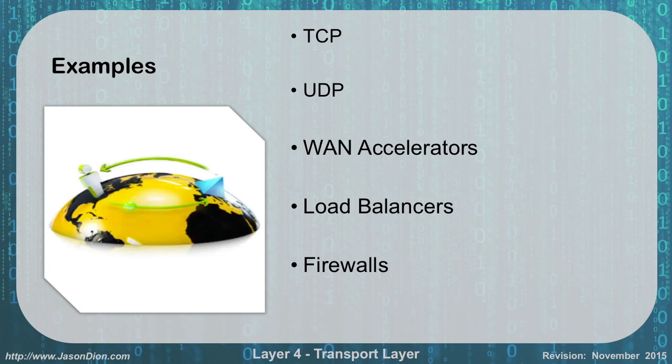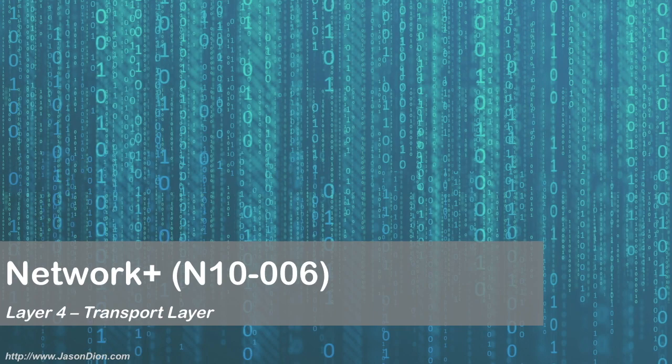Some examples of layer 4 include TCP and UDP. We use hardware devices like WAN accelerators and load balancers, which we'll discuss more when we talk about quality of service. We also have firewalls that operate at layer 4, working based off TCP and UDP connections and tracking those TCP handshakes and requests to ensure that traffic is going in or out of networks properly. And that is the transport layer.